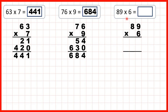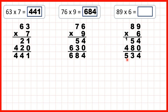Now 89 times 6. On our first answer line we need the answer to 9 times 6, so that's 54. Then we can write a 0 in our second answer line as our ones digit, because we're going to multiply the 8 that's in our tens. 8 times 6 is 48. So now we can add up our answer lines: 4 plus 0 is 4, 5 plus 8 is 13, so 1, 3, and 1 plus 4 is 5. So we have 534.